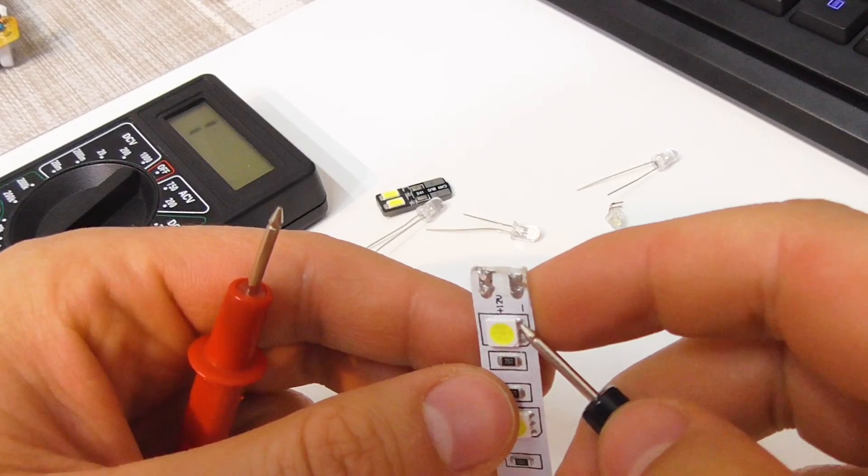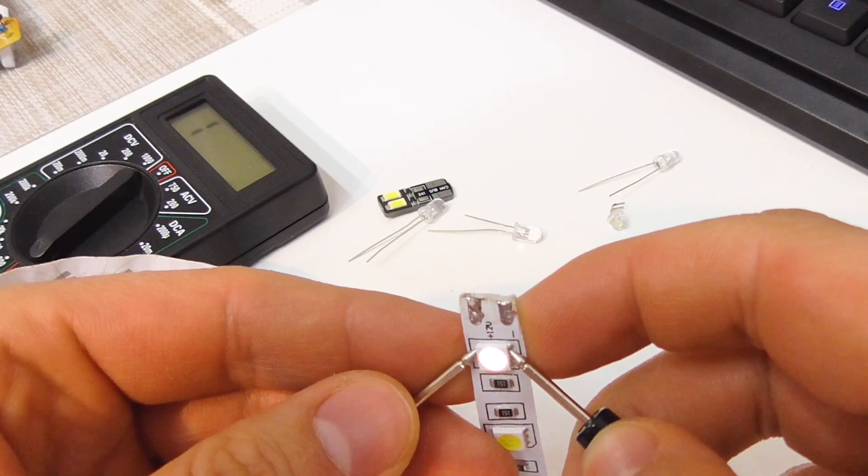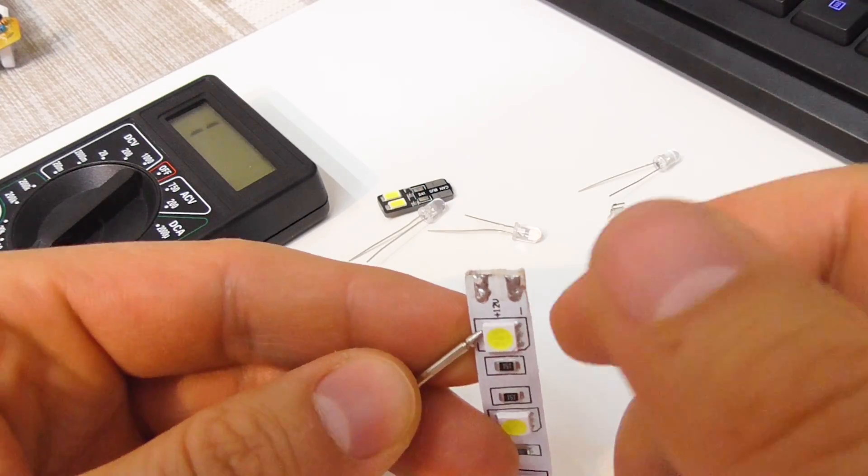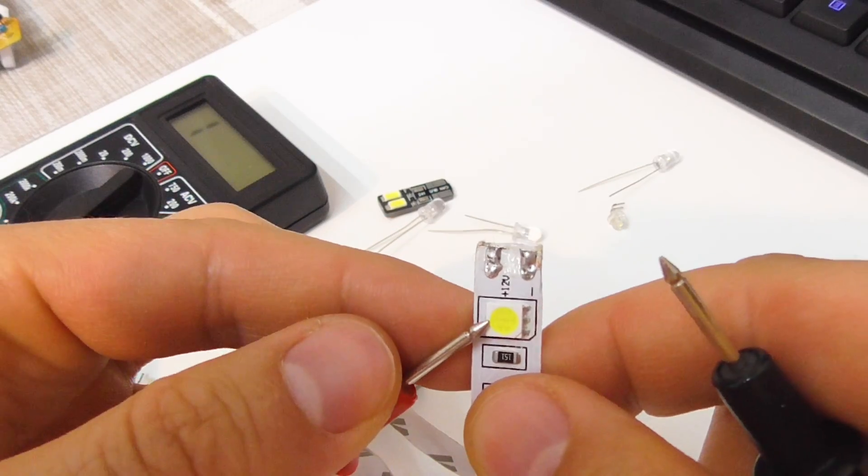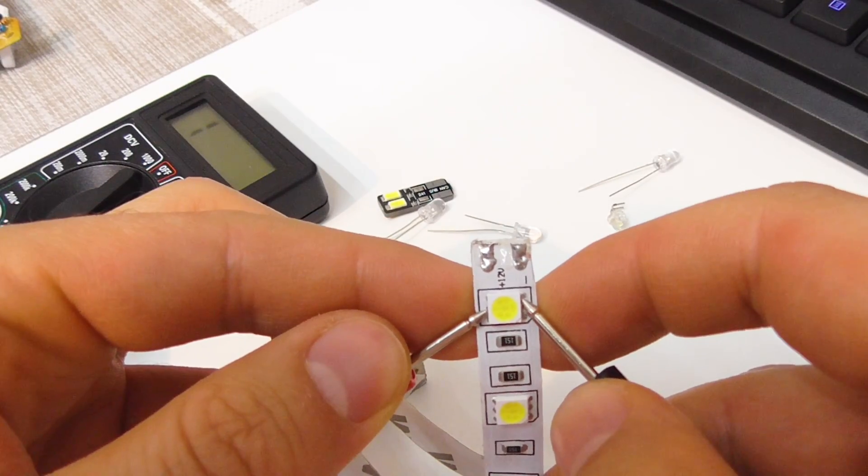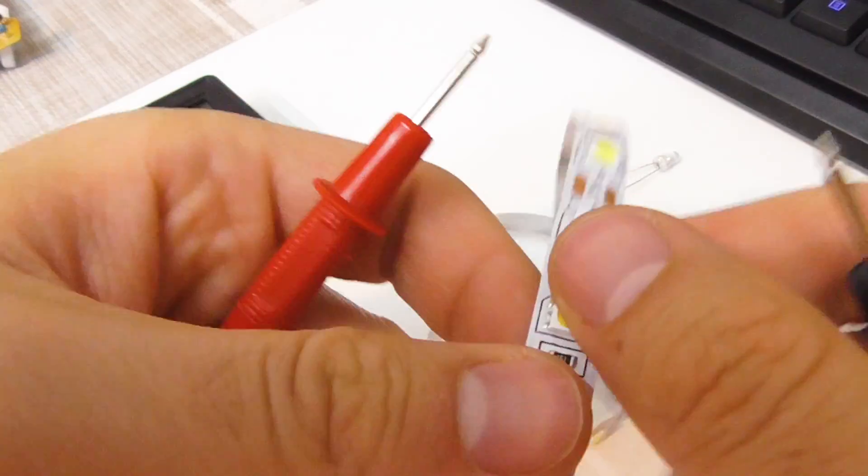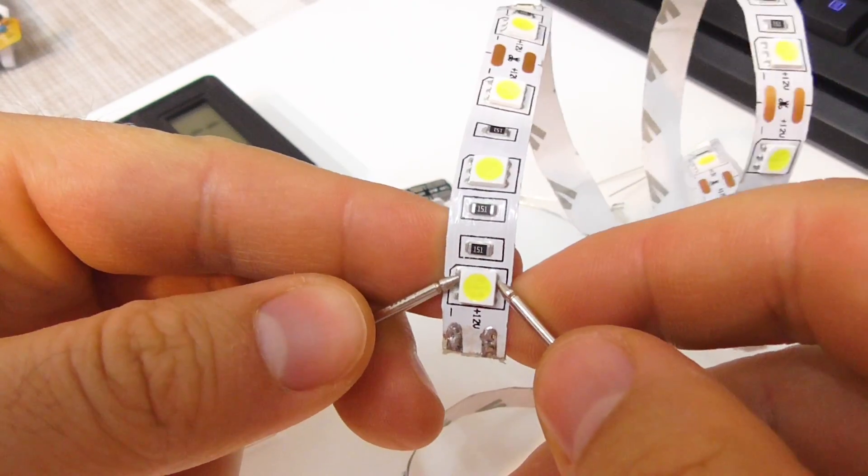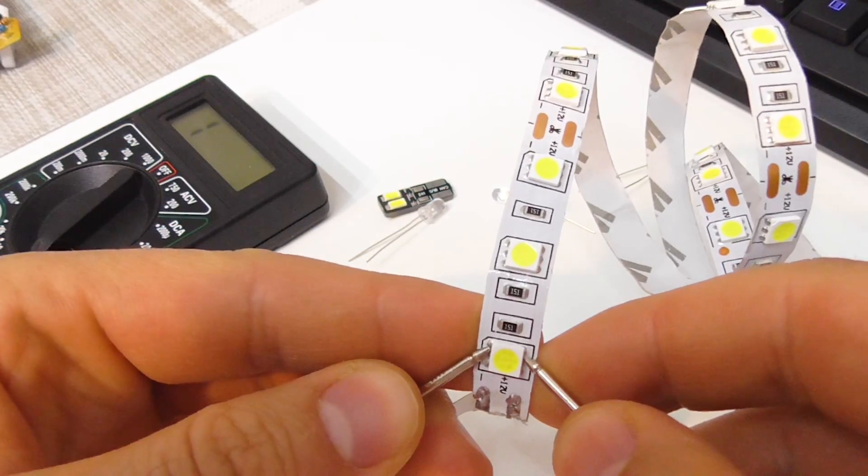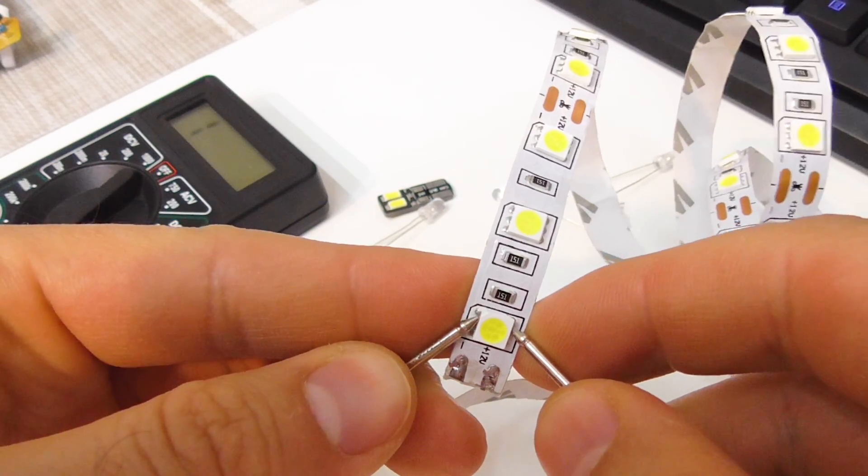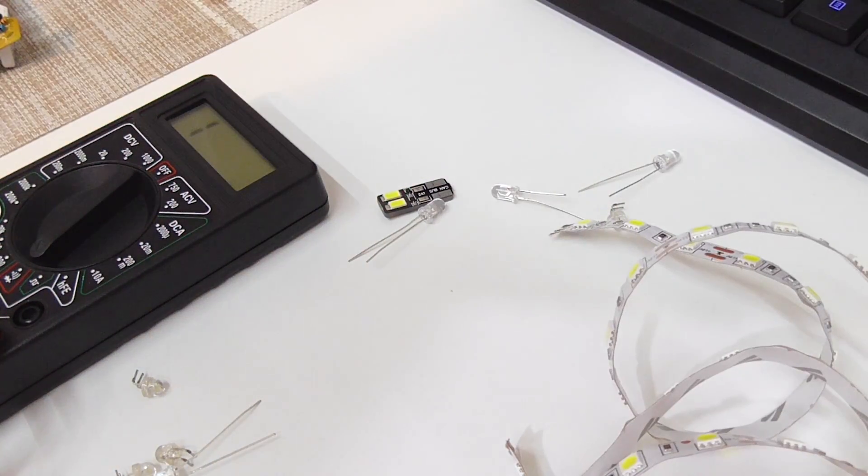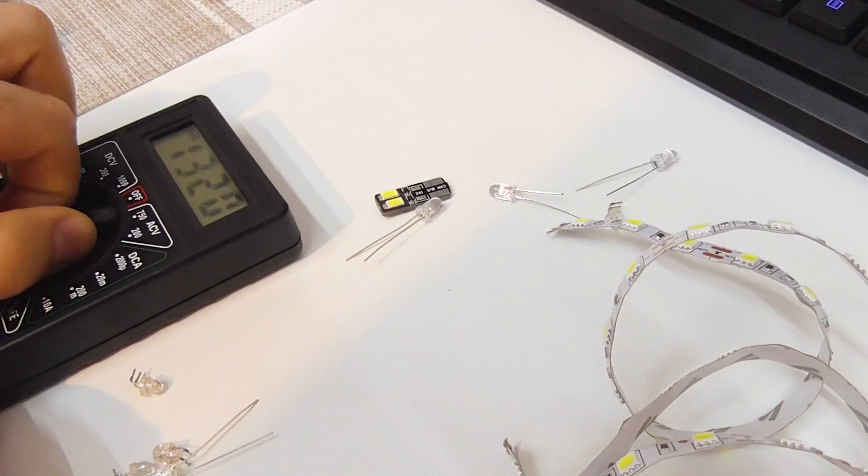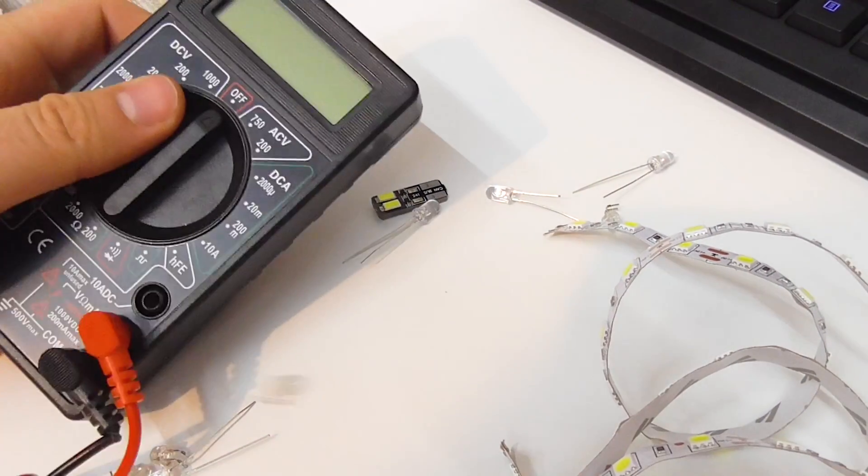So the same thing here. There is no number on the multimeter, negative to negative, positive to positive side, and it should light up like so. If I reverse it, of course it will not do anything. It's not lighting up and it's not beeping and it's not measuring anything on the multimeter either. So that's how to measure if your LEDs are working or not. How to test them by using the multimeter.